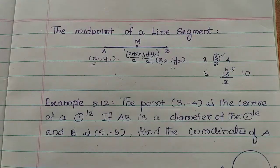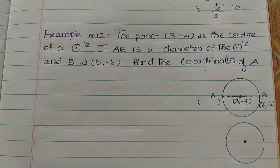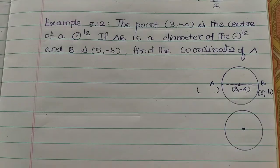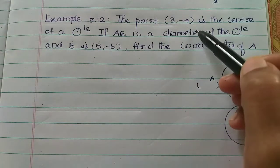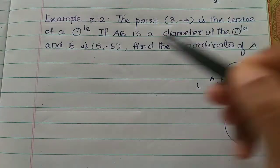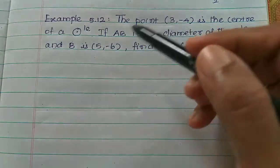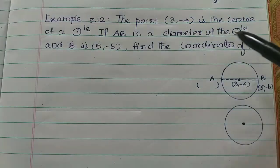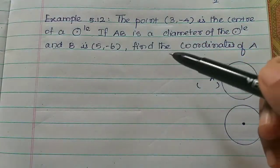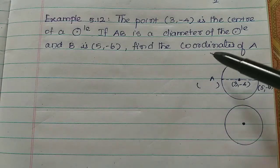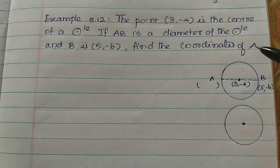It will be very easy. Let's see an example — Example 5.12. The point (3, -4) is the center of a circle. If AB is the diameter of the circle and B is (5, -6), find the coordinates of A.